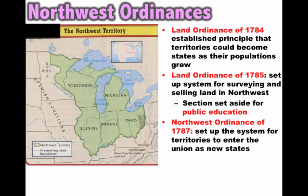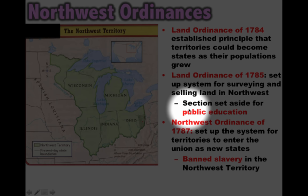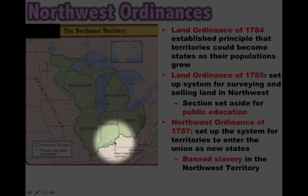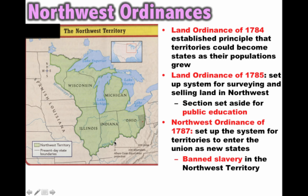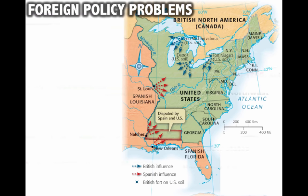The third law under the Northwest Ordinances is the Northwest Ordinance of 1787. This set up the system for territories to enter the Union as new states. You could eventually see five states created out of this chunk of territory. It said once a territory reached 60,000 residents, they could petition to become a state — equal to the existing states. Under the Ordinance of 1787, they also banned slavery north of the Ohio River in this territory.